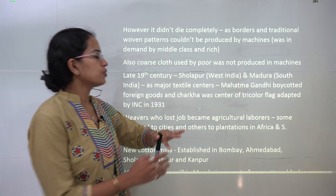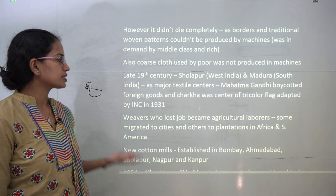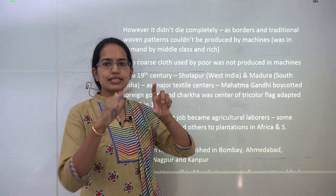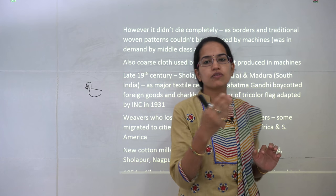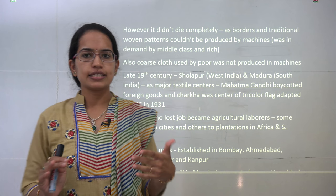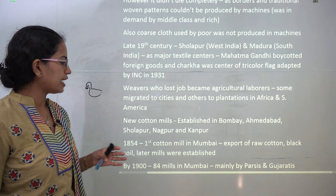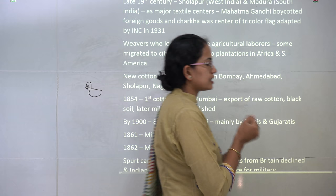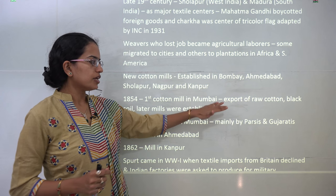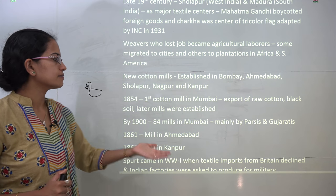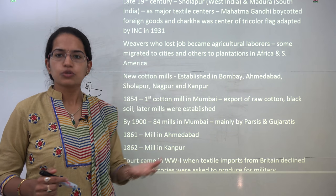During the late 19th century, Sholapur in West India and Madhura in South India became major textile centres. Mahatma Gandhi boycotted foreign products, and the Charkha was placed at the centre of the tricolour flag of the Indian National Congress in 1931. Many weavers who lost jobs moved on as agricultural labourers, and some migrated to other nations like Africa and South America. After Gandhi's efforts, new mills were established in Ahmedabad, Kanpur and Mumbai. The first mill was established in Mumbai, and because of the black soil in that region, later mills were set up in nearby areas with good cotton growth.